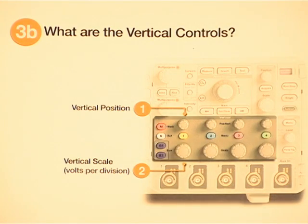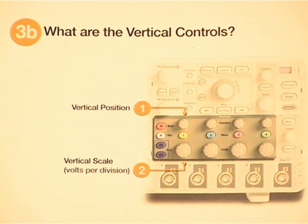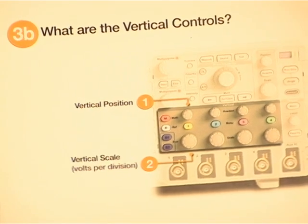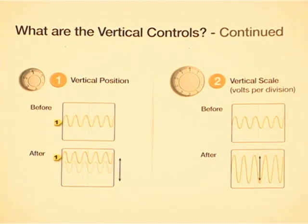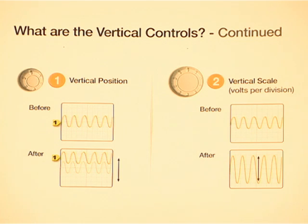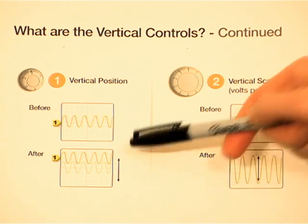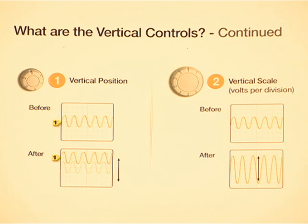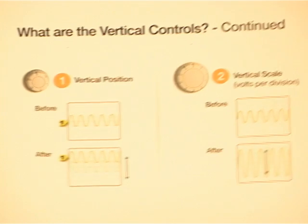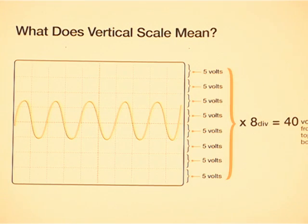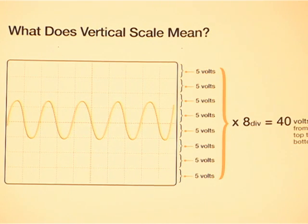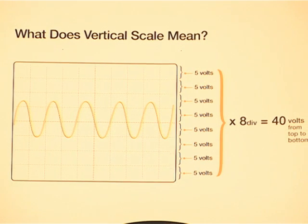So this particular scope can display up to four analog channels from different inputs. And each channel has its own independent set of vertical controls. That means each waveform can be positioned independently of the others on the screen. And the two most important vertical controls are the vertical position and the vertical scale. So the vertical position moves the waveform up and down the screen. And the vertical scale expands or compresses the waveform vertically. Vertical scale is expressed in volts per division. So this particular model of scope has eight vertical divisions. Most of our scopes have ten. But if you have eight, and if you happen to have it set to five volts per division, you could fit a 40 volt peak to peak sine wave on the screen.